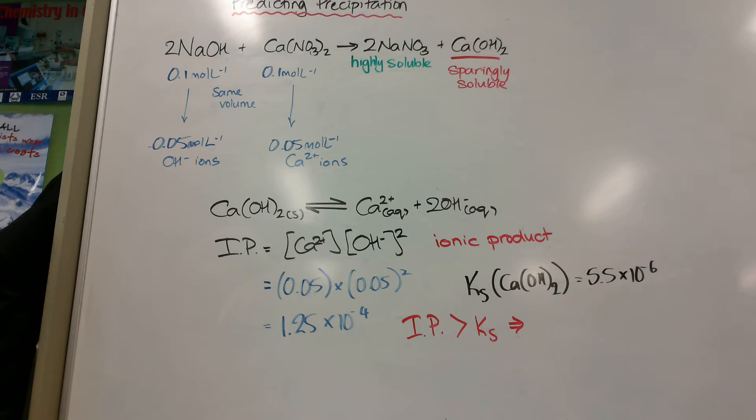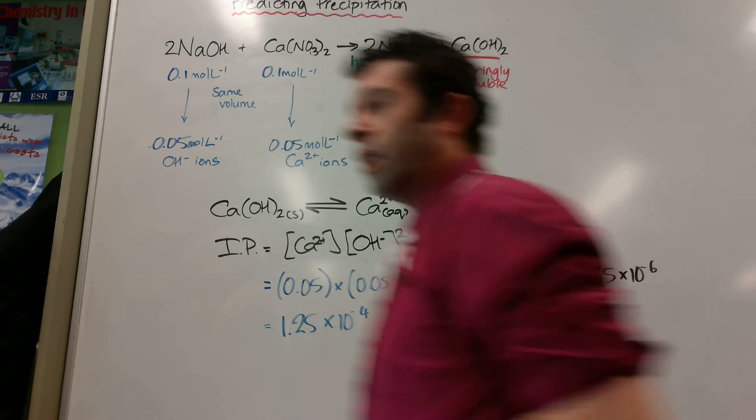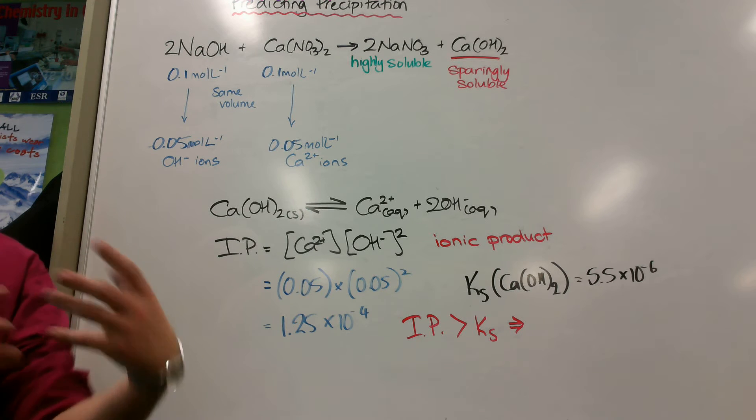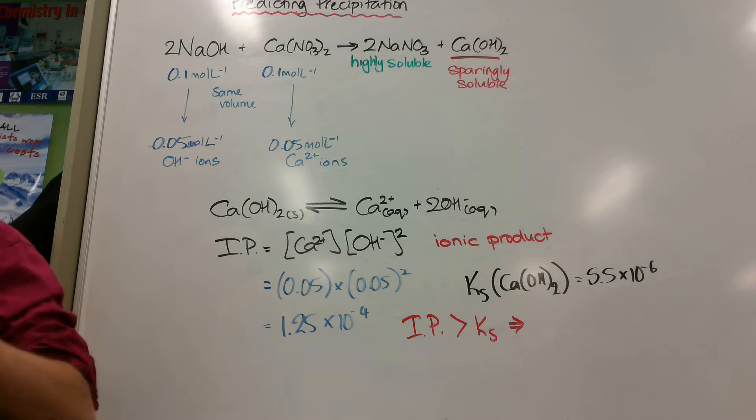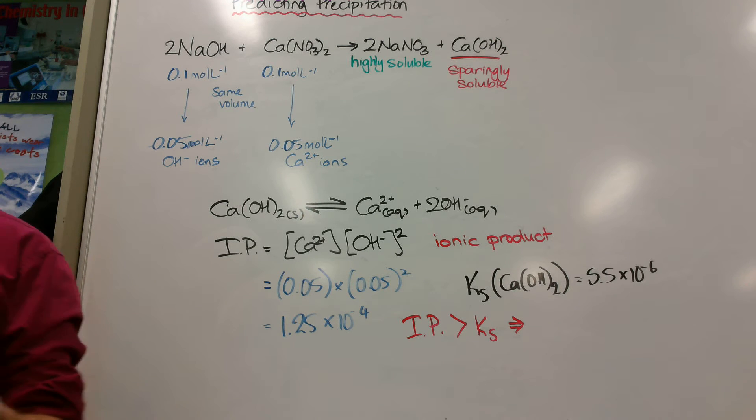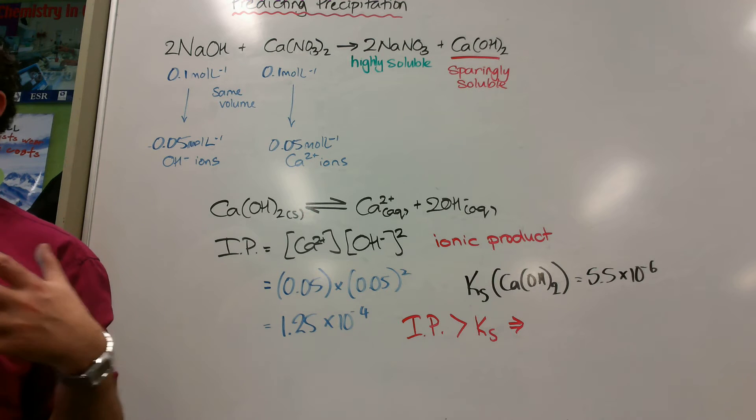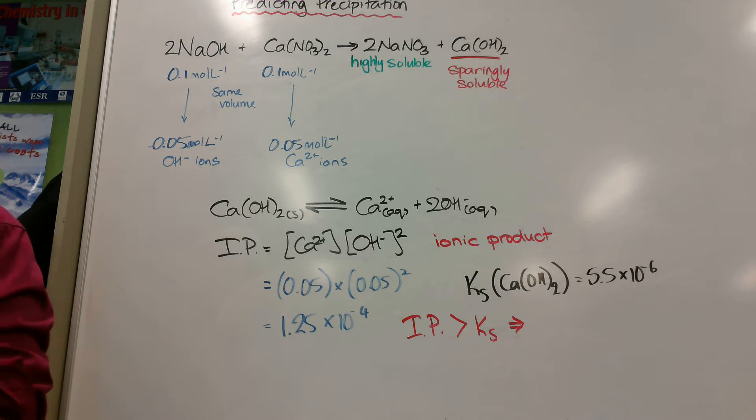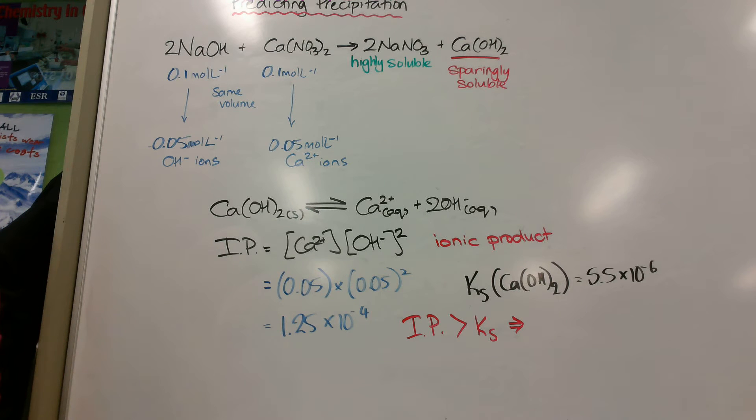So in year 11 and probably even some of year 12, you learned some rules about things being soluble, sparingly soluble, and insoluble. If you mix two solutions together, you can predict whether a precipitate formed or not based on those rules. For example, if I put lead nitrate with potassium iodide, I knew I'd get lead iodide, which is insoluble, and so I'd see that yellow precipitate being formed. So I can make those predictions if I knew my rules.